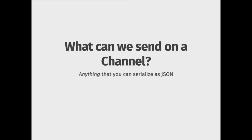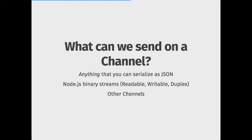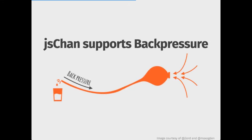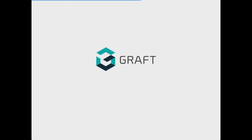So what can we send on a channel? We can send anything that can serialize as JSON, binary streams — readable, writable, and duplex — and other channels, as we have seen. Obviously there is back pressure.